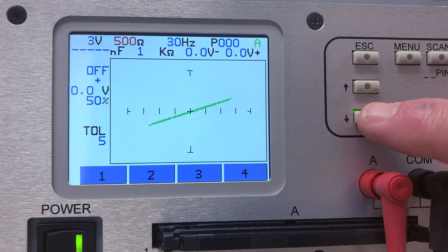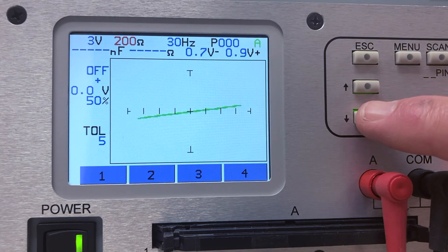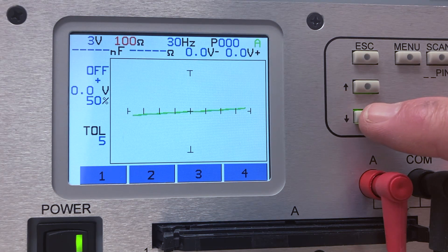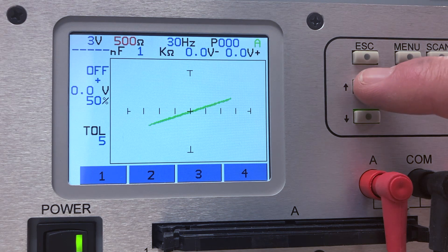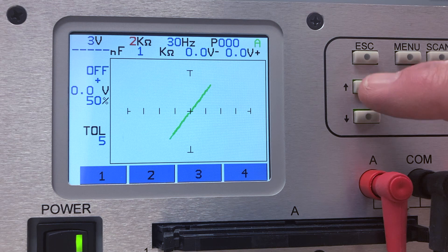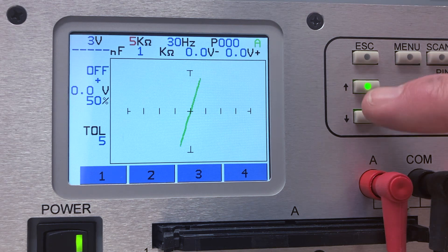Resistive signatures display an angled linear response that is affected by the component value and the range being used by the tracker. In general terms, you want to try and set the tracker resistance range to match the value being tested.